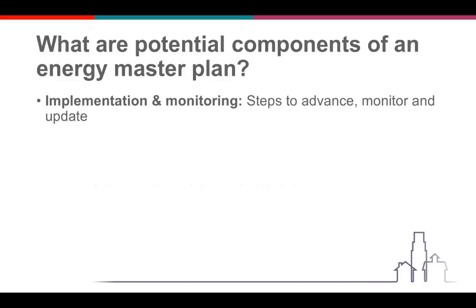Another potential component of an energy master plan is implementation and monitoring. Because if we're laying out these goals and visions and strategies, and we know how our energy makeup is comprised, we want to be sure that we're having success with the ideas and strategies we're putting forward. So we want to lay out a plan for implementation and monitoring going forward. This could involve going back every three or five years to check progress, or setting up check-ins at town or municipal meetings. The important thing is that we keep our eye on what we're doing and make sure that we're hitting the targets we've set.